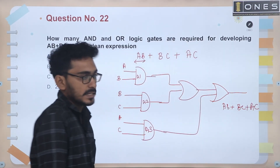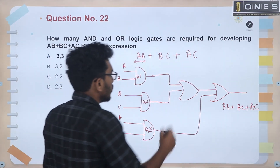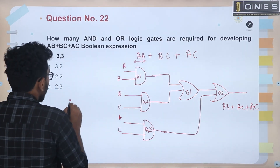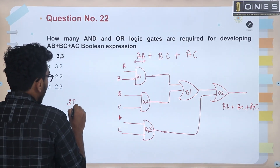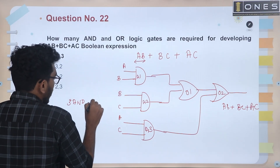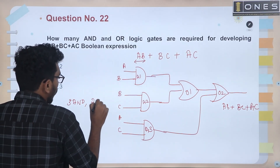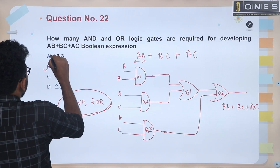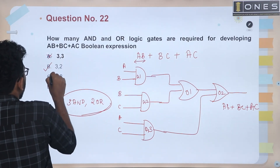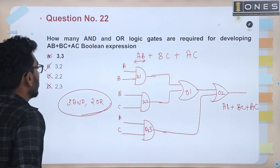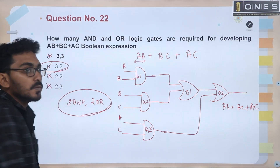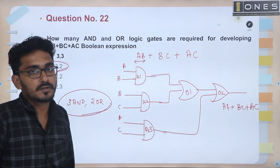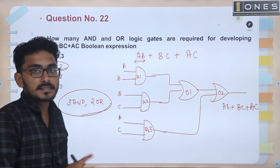AB plus BC plus AC — this is how it is represented. We require 3 AND gates and 2 OR gates. Answer: 3 AND gates, 2 OR gates. Clear.